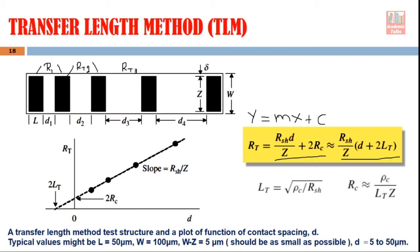Looking at the straight line, M is the slope. If we compare the equation of straight line with the total resistance equation, and noting that D is X, we see that sheet resistance divided by Z is our slope. So if we find the slope of this line — which we can do very easily — and since we know Z (the width of the contact), it is possible to find out the sheet resistance. Sheet resistance of the semiconductor is one important parameter we can extract from this experimental data.